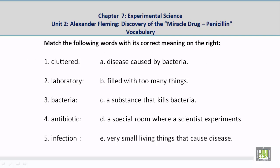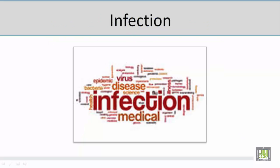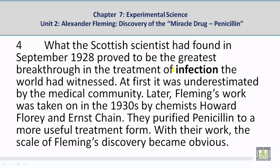Number 5: Infection. The correct meaning — a disease caused by bacteria. Let's take a look at a picture related to the vocabulary word "infection." Student: I see a lot of words here — infection, disease, virus, medical — and infection is a disease caused by bacteria. Now let's look at a paragraph with the vocabulary word infection: What the Scottish scientist had found in September 1928 proved to be the greatest breakthrough in the treatment of infection the world had witnessed.